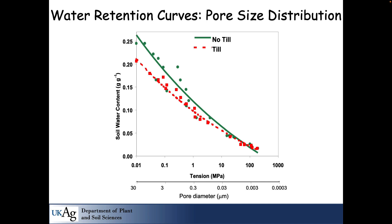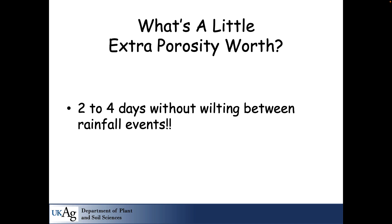Typically in a no-till or grassland environment, larger pore diameters at depth store more water. The water content of the soil is greater where you've got better structure. That means two to four days without wilt before the next rainfall event — it may not be enough, but it's more than you have with a beat-up soil that doesn't hold as much water.